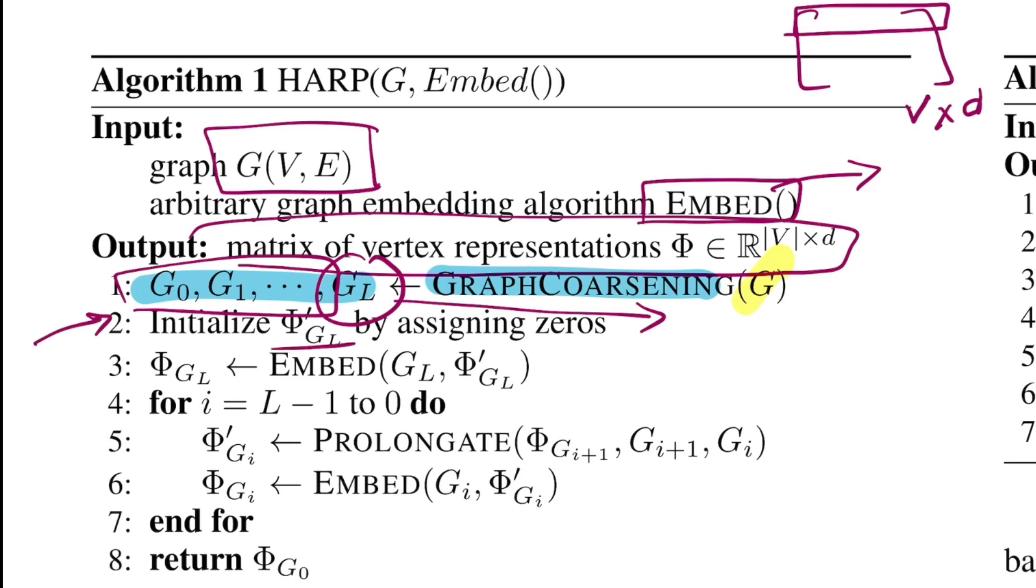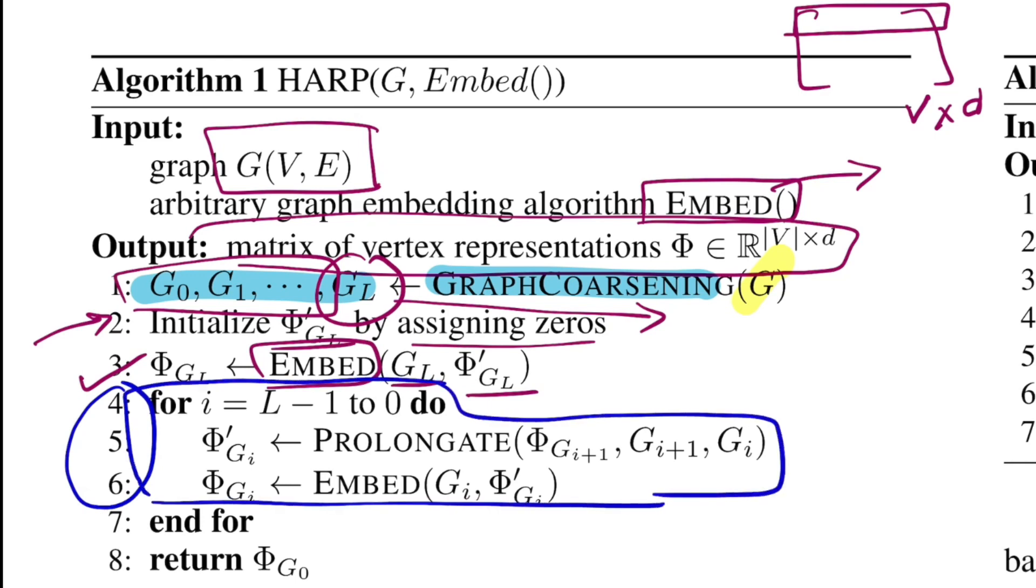In step two, we initialize phi dash GL to zeros. This is an embedding assigned to every node in that graph as initialization. You pass those zero vectors for every node and graph GL to the embed function—let this be Node2vec—and you get a representation for every node in that graph.